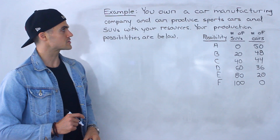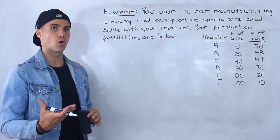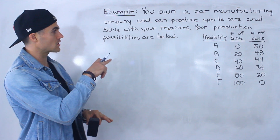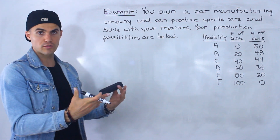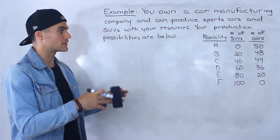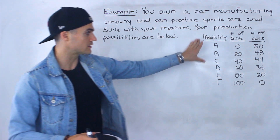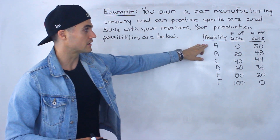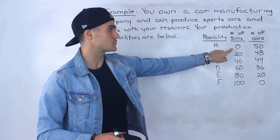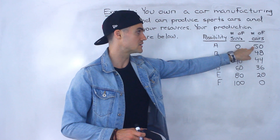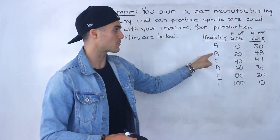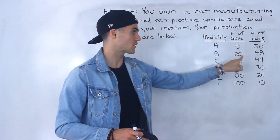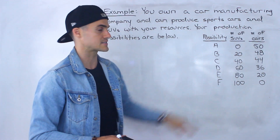Let's show how all this works through an example. Let's say you own a car manufacturing company and can produce two types of cars — sports cars and SUVs — with your limited resources. Your production possibilities are given: one possibility is zero SUVs and 50 sports cars; another is 20 SUVs and 48 sports cars; then 40 and 44, and so on.